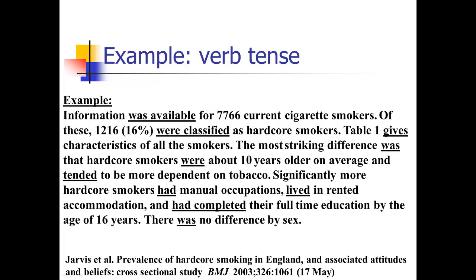Here's a couple of examples. In this study they say 'information was available for this many smokers' — past tense. 'Of those, 1,216 were classified as hardcore smokers' — past tense. But then 'table one gives' — present tense — because table one is still giving those characteristics when the reader reads the paper. Everything else talks about things already measured in the study, so those are in the past tense.